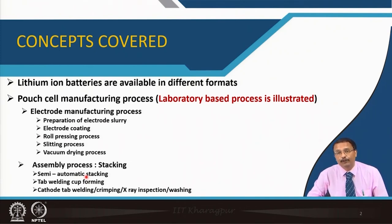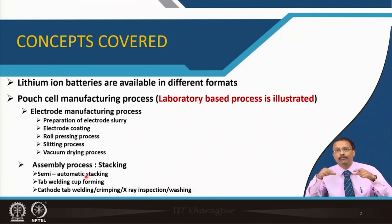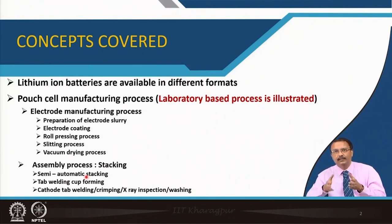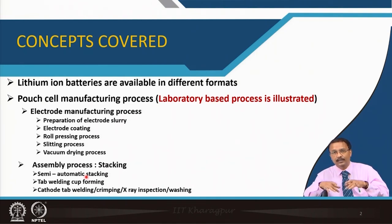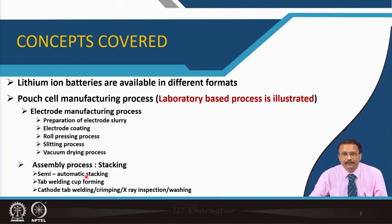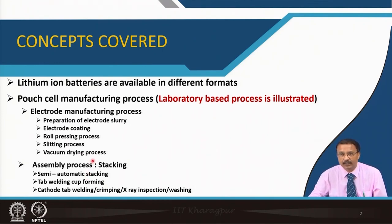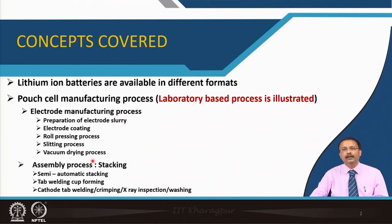Then tab welding is done, and there is something called cup formation where the stack — the so-called jelly roll — is placed inside. Then there is sealing: the vacuum sealing part after cathode welding. We will go step by step through how exactly it is done.